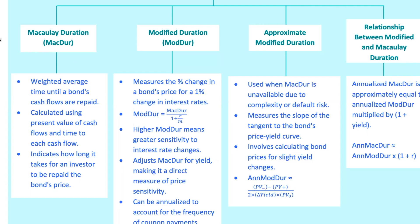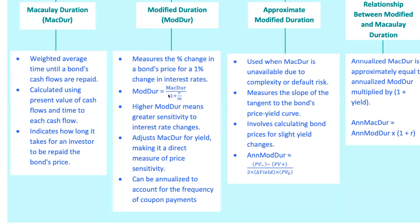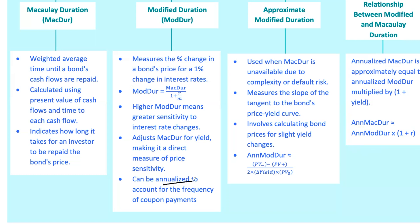Modified duration adjusts Macaulay duration by accounting for the bond's yield. Now, let's talk about annualized modified duration. To make this measure more practical, especially for bonds with semi-annual or quarterly coupon payments, we often annualize modified duration. This gives you a better sense of how sensitive a bond is to interest rate changes over a full year. Suppose you have a bond with a Macaulay duration of five years, a YTM of 3%, and it pays semi-annual coupons. The modified duration would adjust Macaulay duration based on the yield and provide a more precise measure of how much the bond's price will change if interest rates move up or down by 1%.